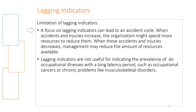A focus on lagging indicators can lead to an accident cycle: when accidents and injuries increase, the organization spends more resources to reduce them, but when they decrease, management reduces the resources available — and this cycle continues on and on. Lagging indicators are also not useful for indicating the prevalence of occupational illnesses with a long latency period, such as occupational cancer or chronic problems like musculoskeletal disorders (MSDs).